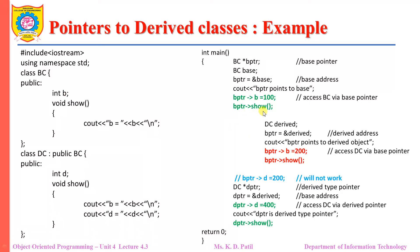This cout statement will display the BPTR pointer to the base statement. If I want to set the value of variable B as 100, I can set that value using the BPTR pointer. We can access the data member integer B of the base class and set the value to 100. When we access the member function of the base class using BPTR, that function will display the value of B on the screen. In this case the show function which belongs to class BC will be executed.